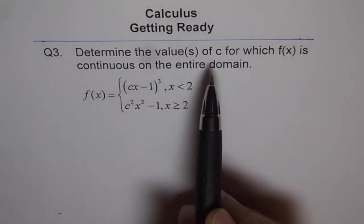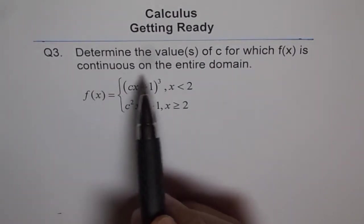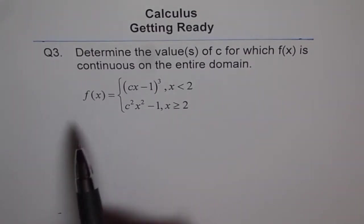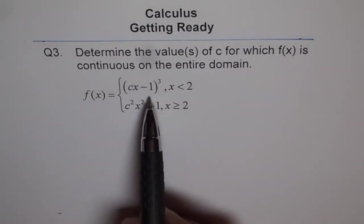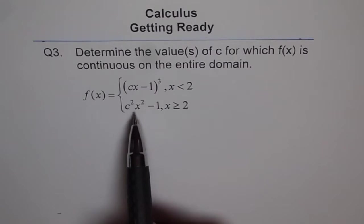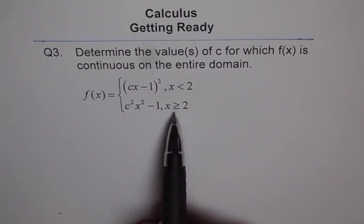Question number three is: determine the values of c for which f(x) is continuous on the entire domain. And here we have a piecewise function. f(x) equals (2cx - 1)³ when x is less than 2 and c²x² - 1 when x is greater than or equal to 2.